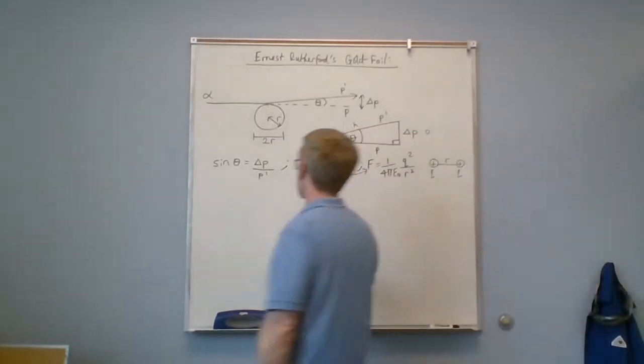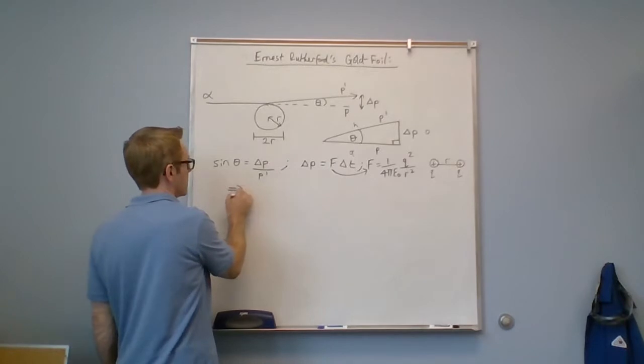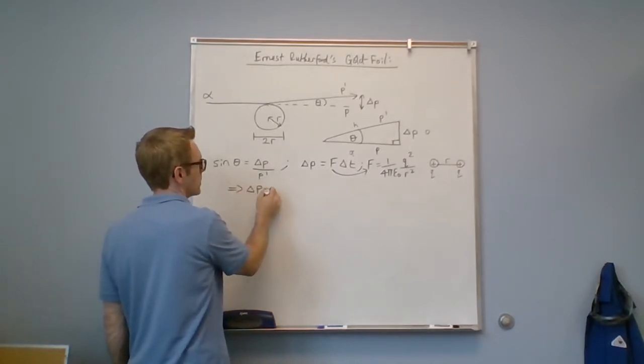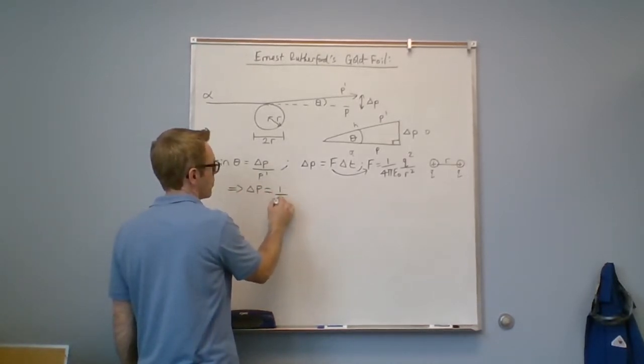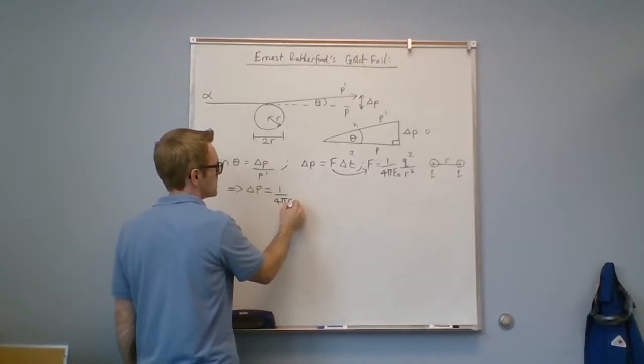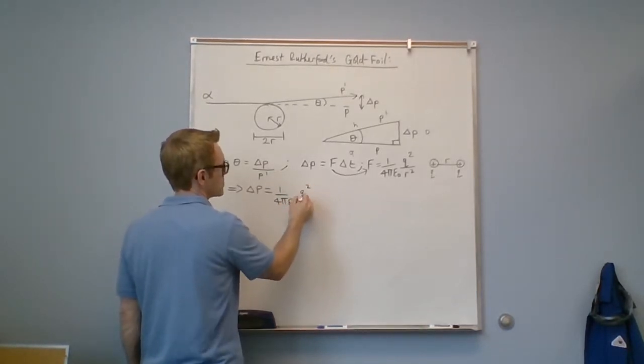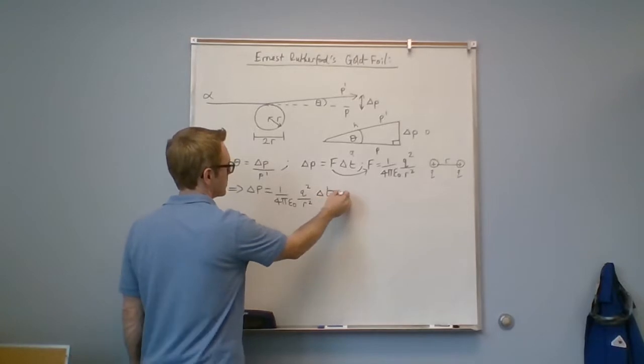We can rewrite this as delta P is one over four pi epsilon zero, q squared over r squared delta T.